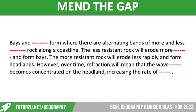The text reads: 'Bays and [something] form where there are alternating bands of more and less [something] rock along a coastline. The less resistant rock will erode more and form bays. The more resistant rock will erode less rapidly and form headlands. However, over time, refraction will mean that the wave [something] becomes concentrated on the headland, increasing the rate of [something].' Note that the number of dashes represents the number of letters in each missing word — the one at the end of the second line has seven letters.